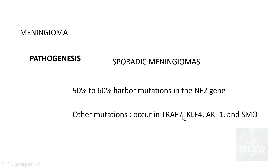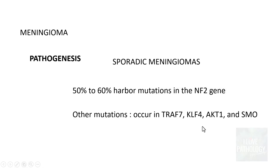Apart from the NF2 gene mutation, other mutations which can be seen in Meningiomas include TRAF7, ALK4, AKT1, and SMO genes. These are additional mutations which can be observed in Meningiomas.